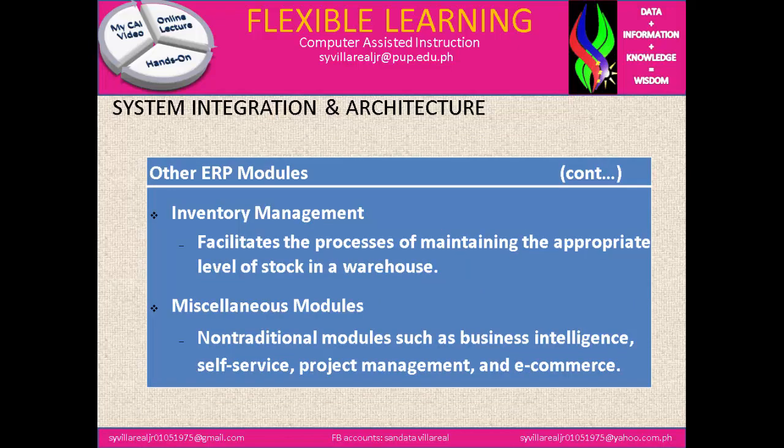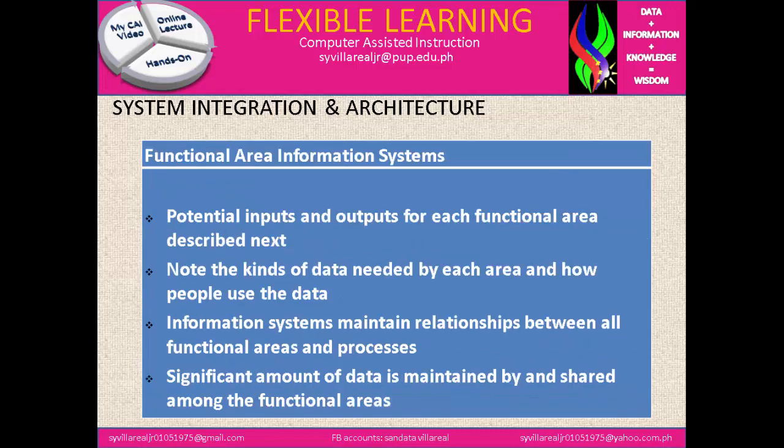Next is inventory management. It facilitates the processes of maintaining the appropriate level of stock in a warehouse. Then we have miscellaneous modules, which are non-traditional modules, including business intelligence, self-service, project management, and e-commerce. Under functional area information systems, which identifies potential input and output for each functional area, note the kinds of data needed by each area and how people use the data. It also identifies information systems and maintains relationships within all functional areas and processes.